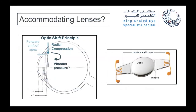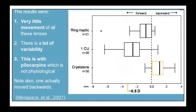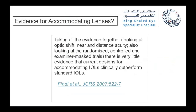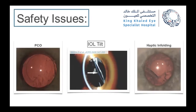The second approach is accommodating lenses, which utilize an optical shift principle to simulate natural accommodation. In reality, these lenses do not move effectively. Even with pilocarpine, patients did not achieve good near or intermediate vision in the literature. There is very little evidence that current accommodating lens designs work for presbyopia, so they have fallen out of favor. Additionally, there is a safety concern of haptic fibrosis, IOL tilt, and high risk of PCO.